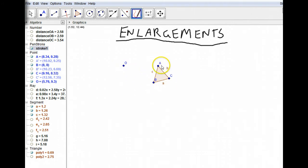We've got our triangle A, B, C. We've also got what's called our center of enlargement. This is our center of enlargement.